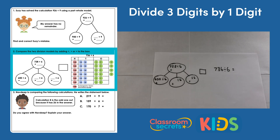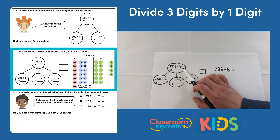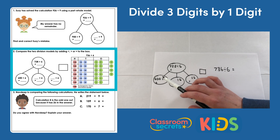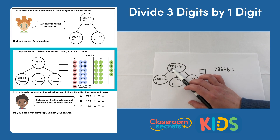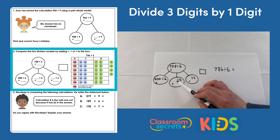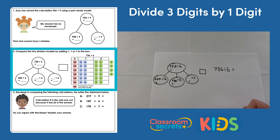We have two different types of calculation here. The first is a part-whole model, the second is on a place value grid. Looking at the part-whole model first for 728 divided by 6: it's been identified that 600 can easily be divided by 6. We still have 100 that we need to exchange into the tens column, so instead of 20 in that column we're going to have 120. That leaves us with 8 in the final space.